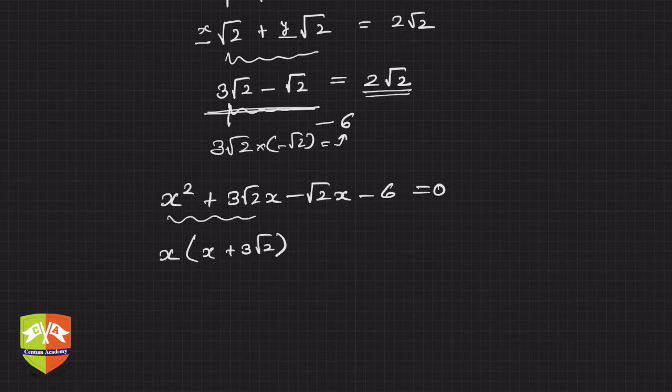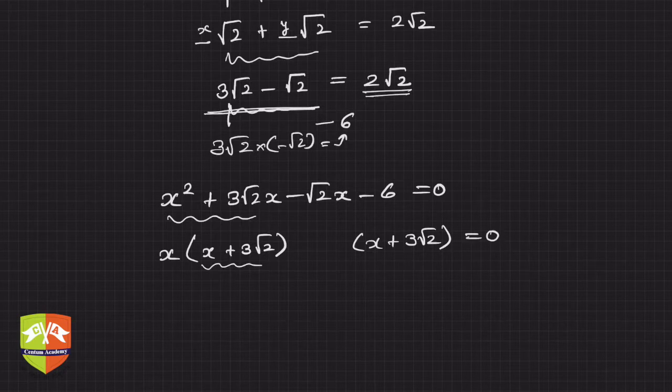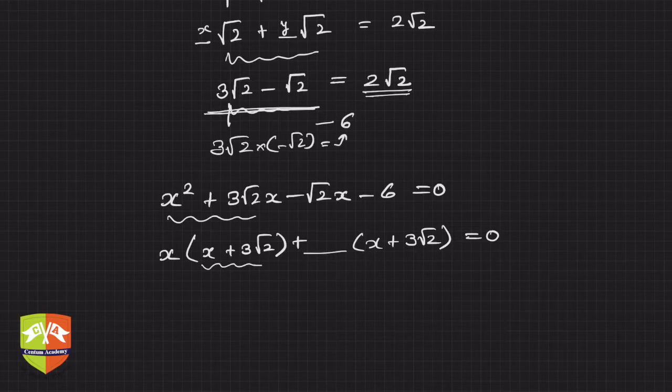Now, without any thought, you can just write this x + 3√2 here because it has to be that common factor again. Now we have to just fill in this blank. So how to do it? Just check what should I multiply x with to get this term, and that is nothing but -√2.